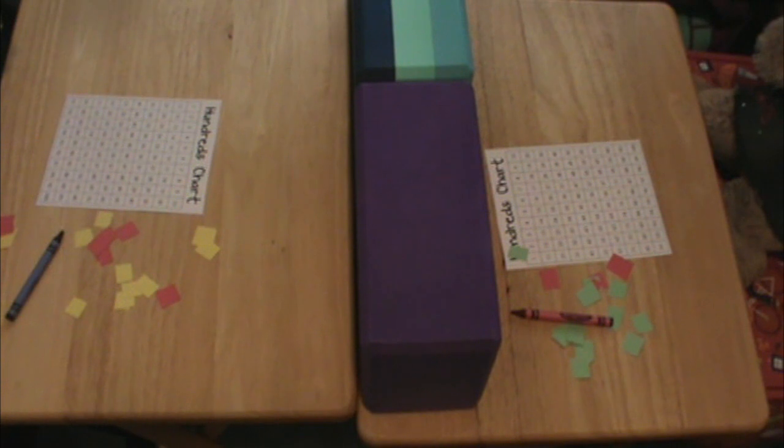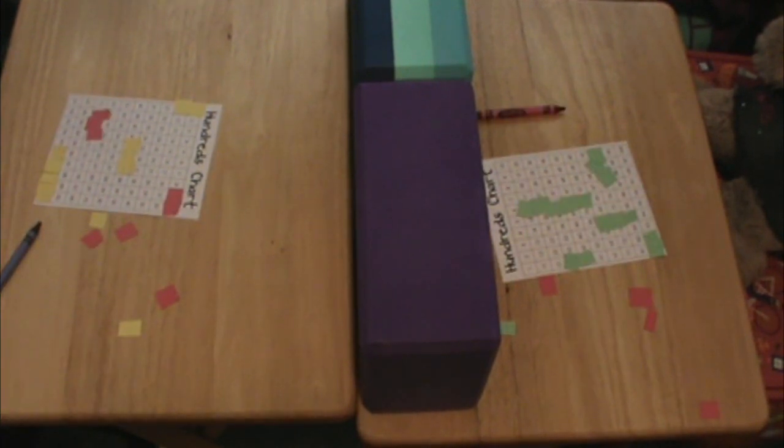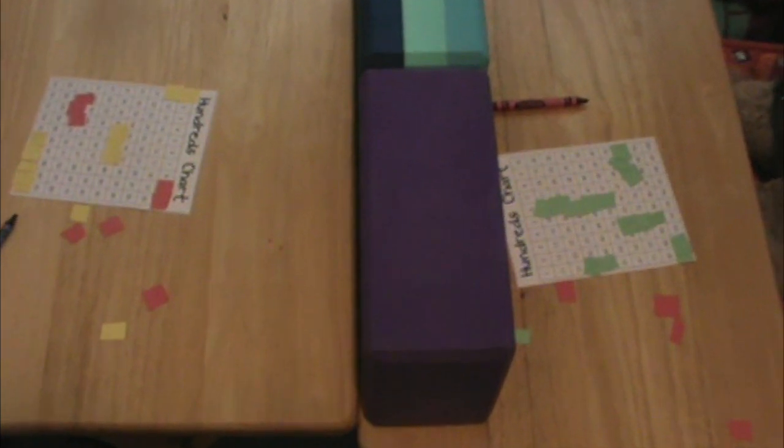First things first, my two students are going to have to mark five ships and place them wherever they want on their hundreds chart. Remember, one ship is two squares, another, I think two ships are three squares, and one ship is five, and we'll make the last one another two squares.